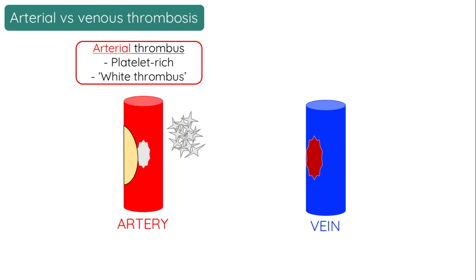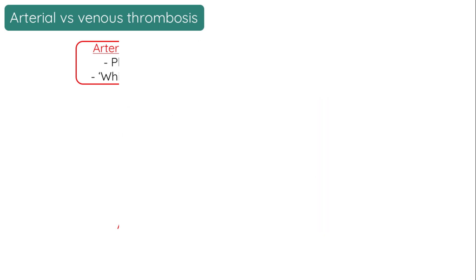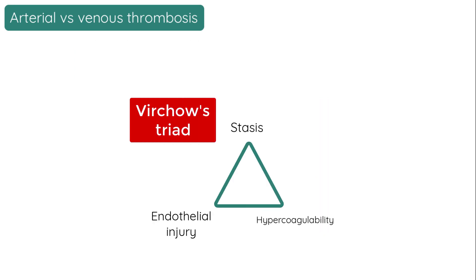Atherosclerotic plaques don't really occur in veins because of the low pressure, and so the major factor in venous thrombosis is simply stagnation of blood, or venous stasis, and we know this because it makes up part of Virchow's triad of thrombosis.